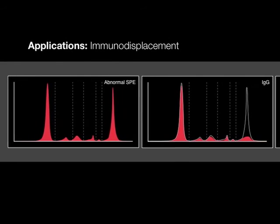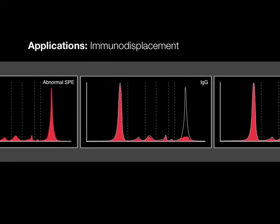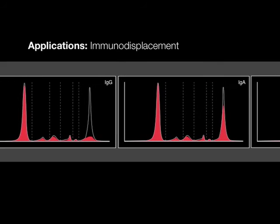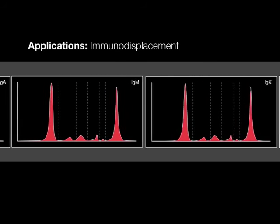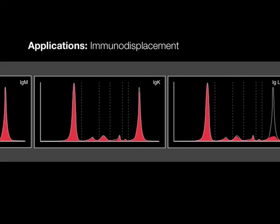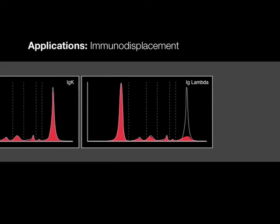Immunotyping is handled by our immunodisplacement assay, the capillary electrophoresis equivalent of immunofixation. Immunodisplacement allows fast, clear, and simple identification of monoclonal components in both serum and urine samples.